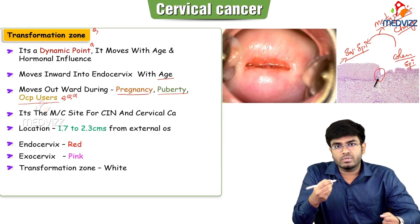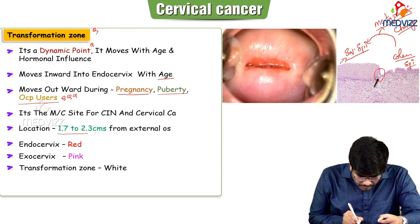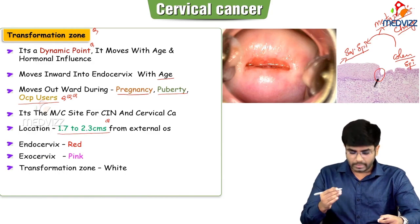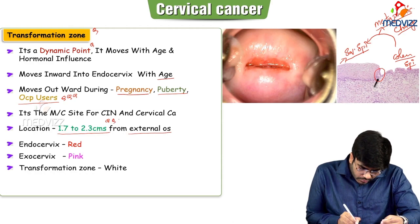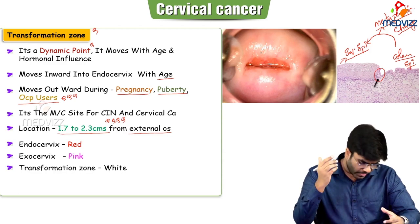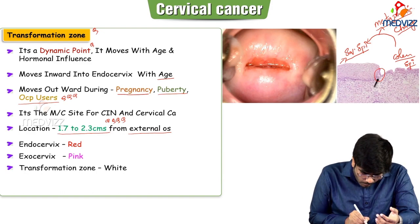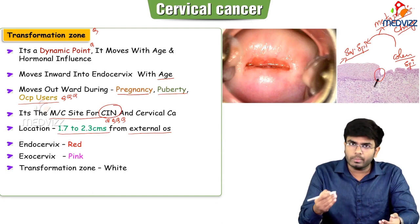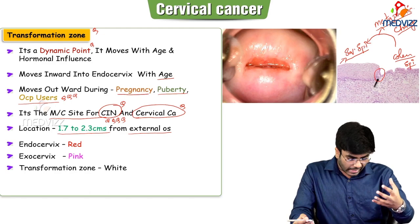Where exactly is this transformation zone located? It is located 1.7 to 2.3 centimeters from the external os — this is an important MCQ. The importance of this transformation zone is that it is the site for dysplastic and neoplastic changes to happen. Both cervical cancer and CIN are most likely to arise from the transformation zone or squamocolumnar junction.